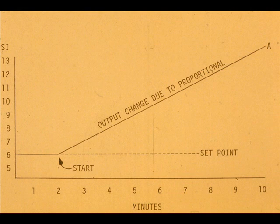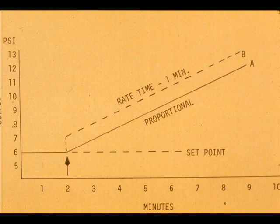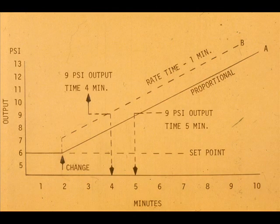Curve A represents a proportional controller output change caused by the measurement moving away from the set point at a steady rate. Curve B shows what the output would be if the controller had rate action and the rate time set at one minute. At any point along curve B, the output is advanced by one minute ahead of the proportional only output.